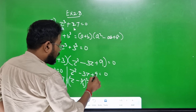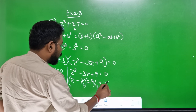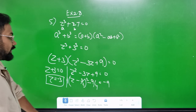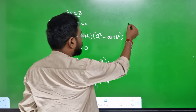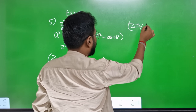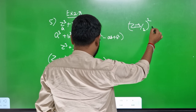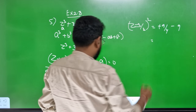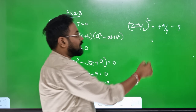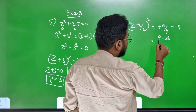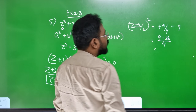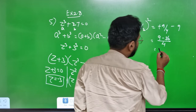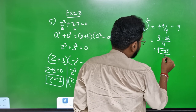3 by 2 squared is 9 by 4. This is plus 9. Plus 9 equals minus 9. Now, z minus 3 by 2, whole square equals minus 9 by 4 minus 9. Now 9 by 4: that's 9 times 4 is 36, minus 36 divided by 4. 9 minus 4 is 36, 36 equals 9, which is 27. So minus 27 divided by 4.